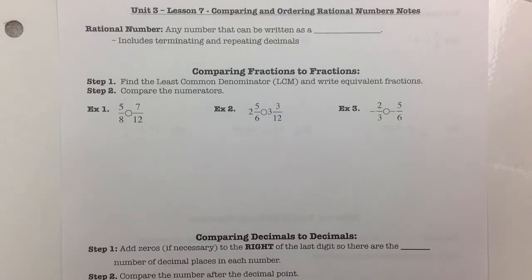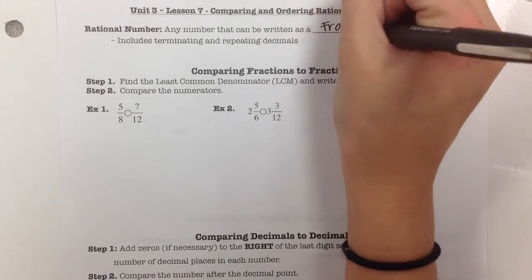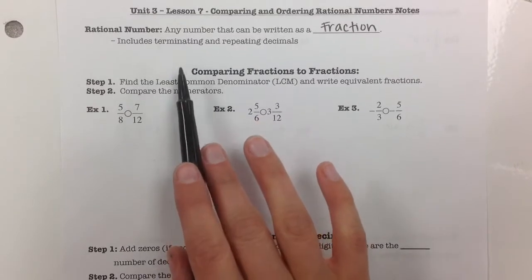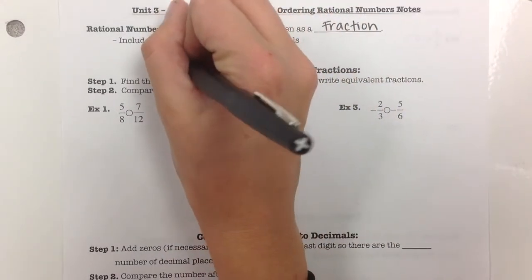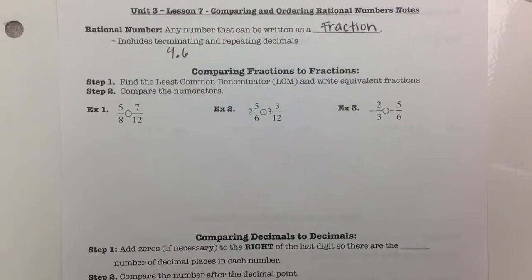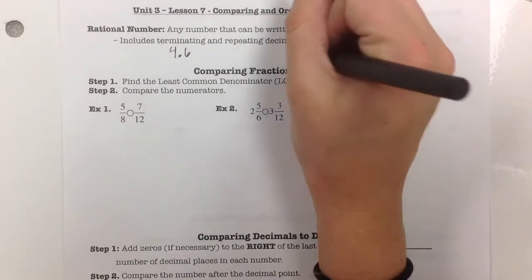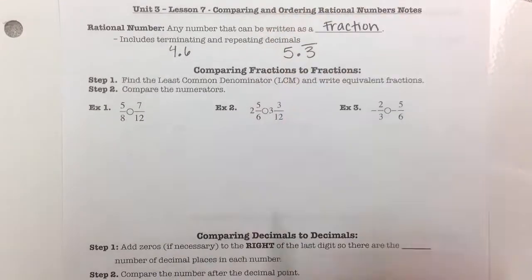For this lesson, we're going to talk about comparing and ordering rational numbers. What we have to remember is that a rational number is any number that can be written as a fraction. This includes terminating decimals, which means they come to an end — like 4 and 6 tenths — and repeating decimals, like 5 and 3 tenths repeating.